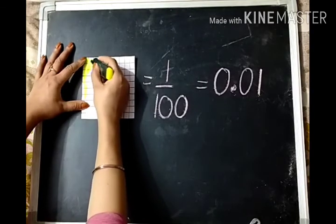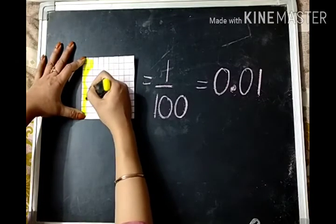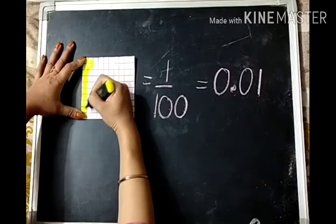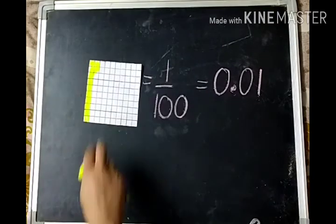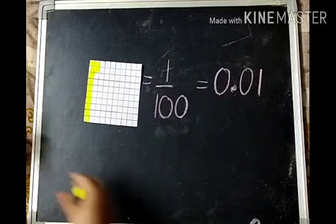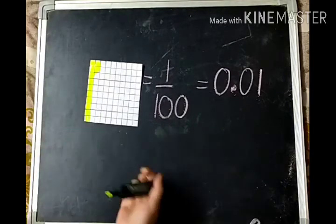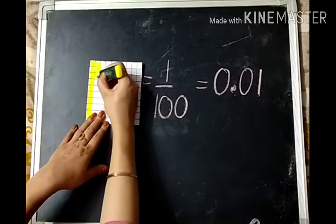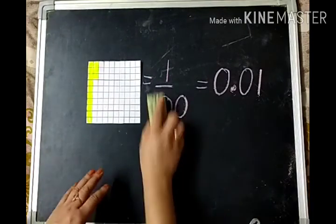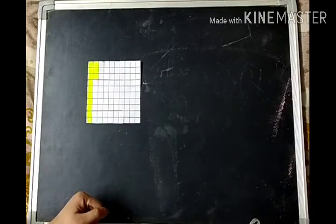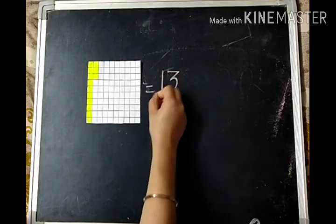Or if I shade this much — these are one tenth. This one: if we join these ten hundredths, it will be equal to one tenth. So this will be written as thirteen hundredths.